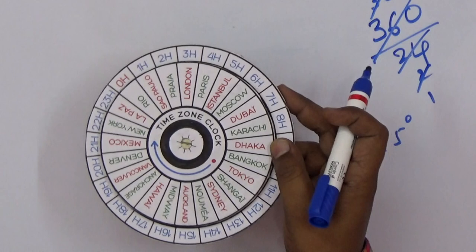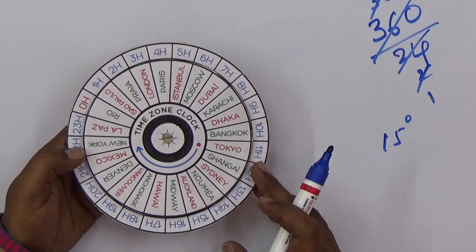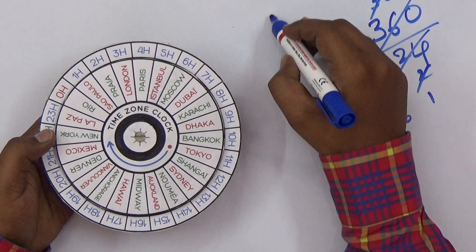To make one-hour time differences, you can take a number of divisions. Instead of 24, you can take 48 divisions and make 15 divided by 2, which is 7.5 degrees.